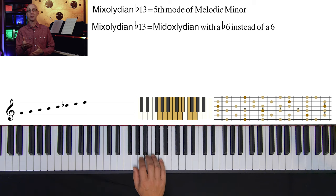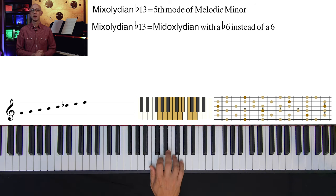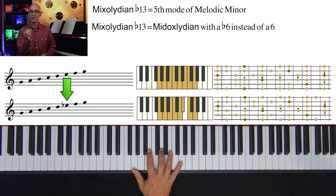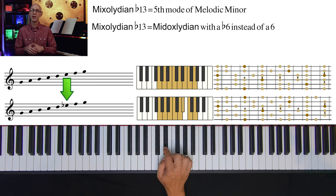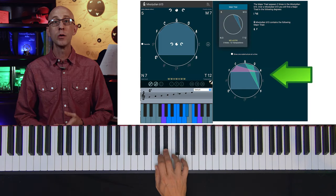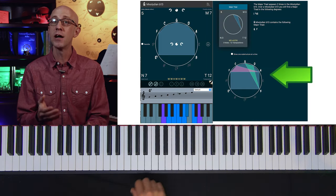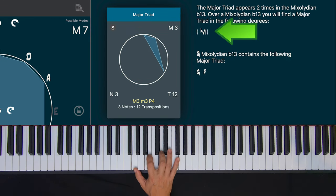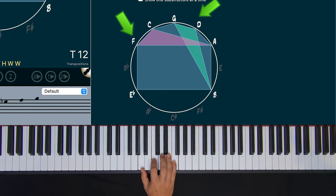James Horner is using mode 5 of the melodic minor, which is Mixolydian flat 13. When we look at the scale, we can see that's exactly what this scale is — a Mixolydian with a flat 13, or flat 6 if we put the scale inside of one octave. So a G Mixo flat 13 is just a G Mixo with an E flat instead of an E. When we look for major triads inside of the Mixo flat 13, we find them on the 1 and the flat 7. In Mixo flat 13, that's G major and F major, and there's no other major triads.